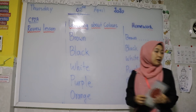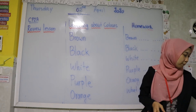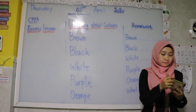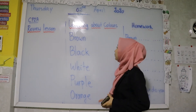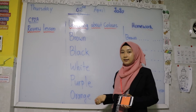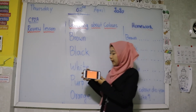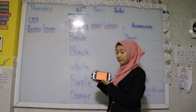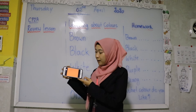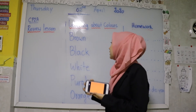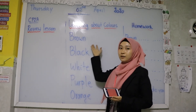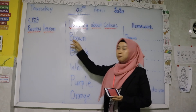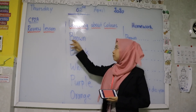Let's move to our new word. Our new word is brown. Do you know brown color? If you don't know, let me show you. This is brown color. Brown. Let's spell the word brown. Brown is spelled B-L-O-W-N. Brown.